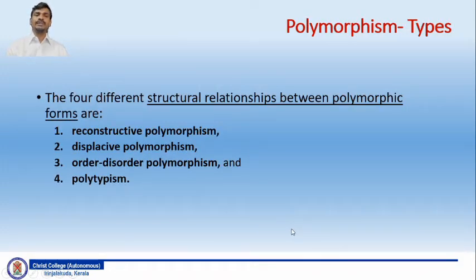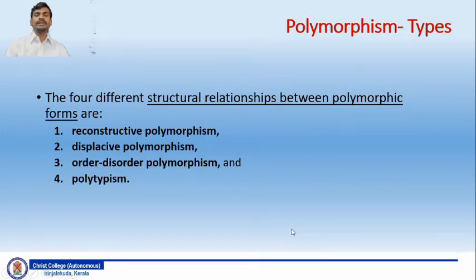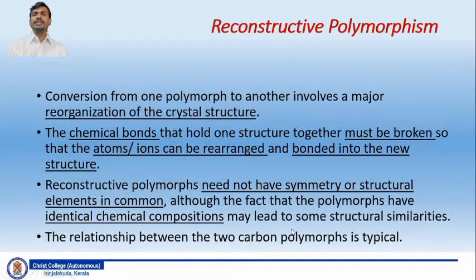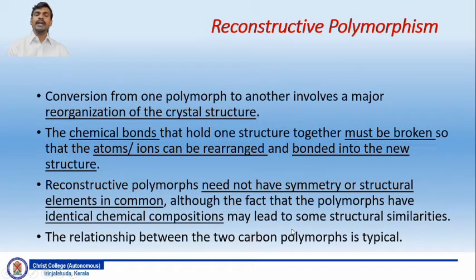There are different types of polymorphism. Four different structural relationships between polymorphic forms are named as reconstructive polymorphism, displacive polymorphism, order-disorder polymorphism, and polytypism. When we consider reconstructive polymorphism, conversion from one polymorph to another involves a major reorganization of the crystal structure. The chemical bonds that hold one structure together must be broken so that atoms or ions can be rearranged and bonded into a new structure.